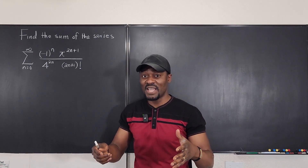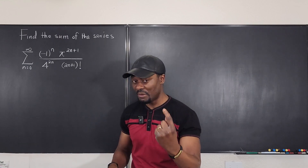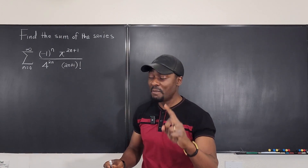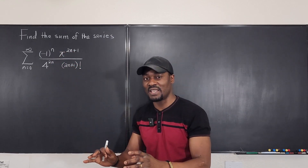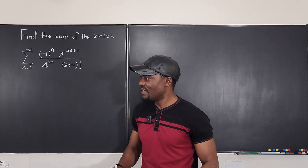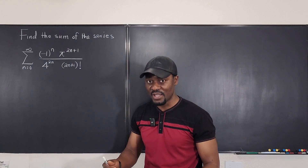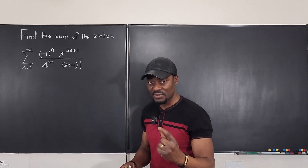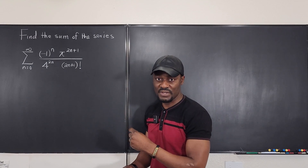It's required that you know the Taylor series representation for each of these functions. I'm going to write them out. The first one is e to the x — you're going to compare whatever you have to e to the x. If it doesn't match, move on to sine x, then cosine x. Let's get into the video.